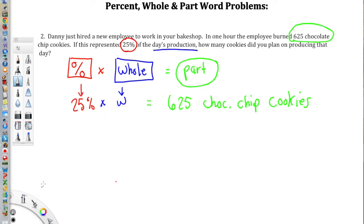So what do I do? I have my formula of 25% times w is equal to 625. Or in other words, 25% will be changed to 25 hundredths times w is equal to 625 cookies. So there goes each of our parts. We have an equation. This is a one-step equation. We just need to solve for w, which is the whole or total day's production that was planned on.